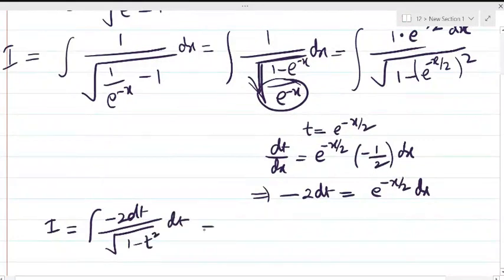Minus 2 can be taken common, dt upon root of 1 minus t square. Integral of this is sine inverse t plus c. So finally, the answer is this.